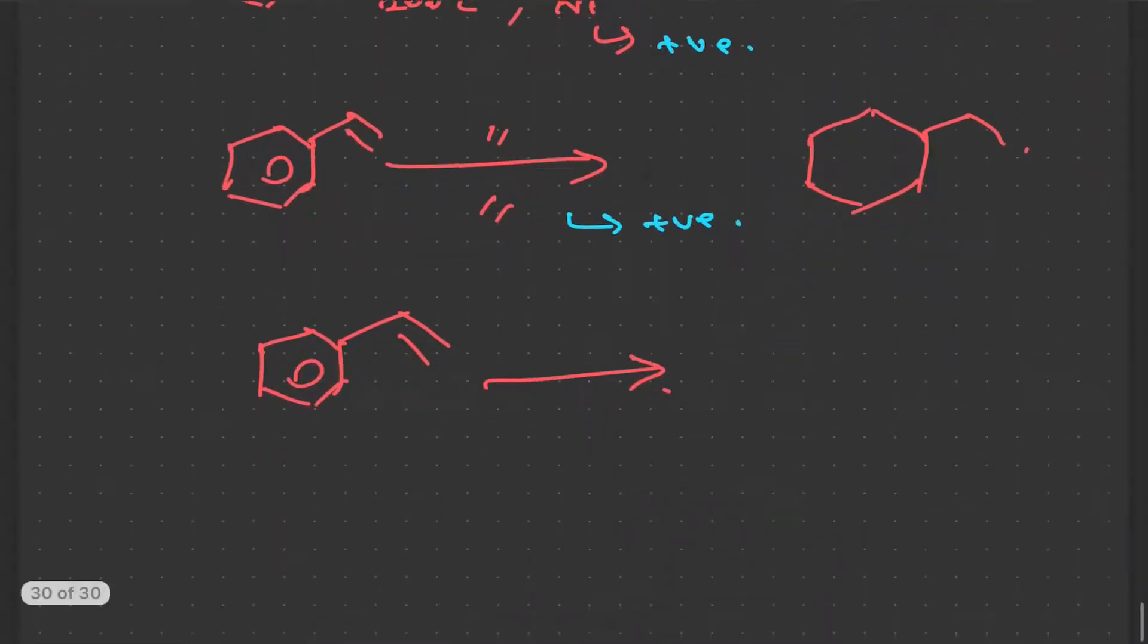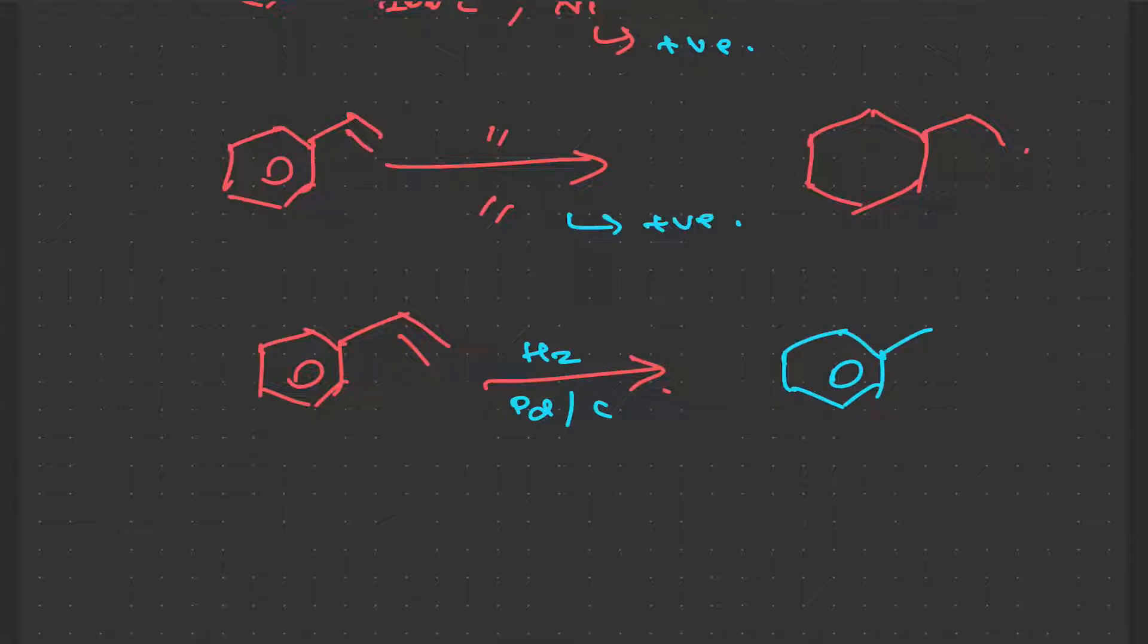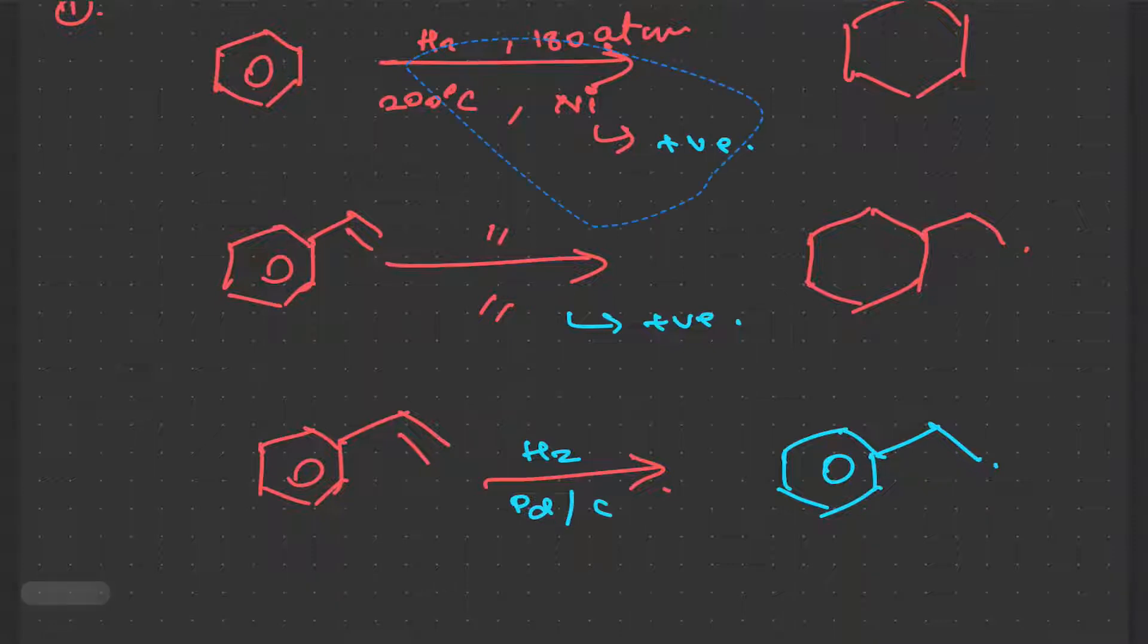But if I give H2 palladium in presence of carbon, that's graphite basically, you see that only the outer, outside the ring, the conjugation is happening. Because the reagent used is not strong enough for hydrogenation, as compared to the nickel and these conditions, due to which only the hydrogenation is happening outside the ring on the side chain.